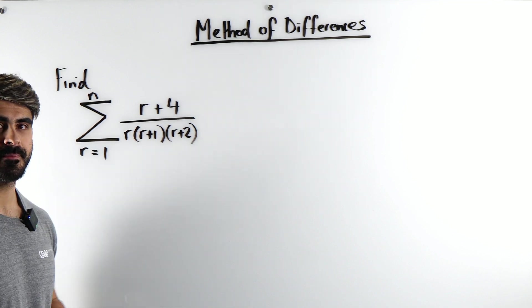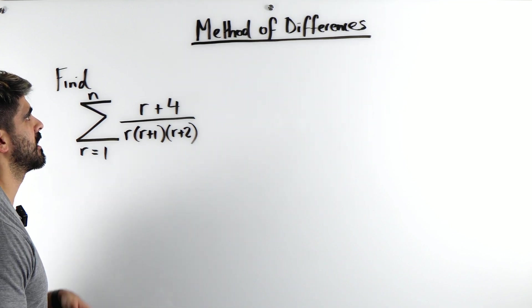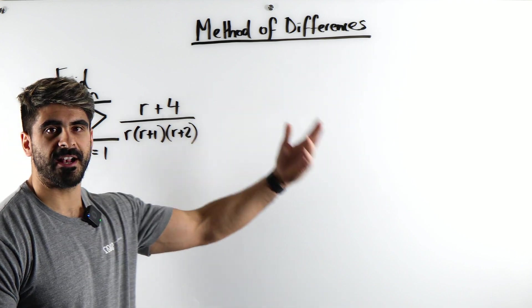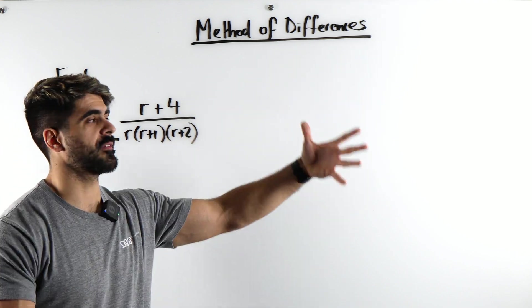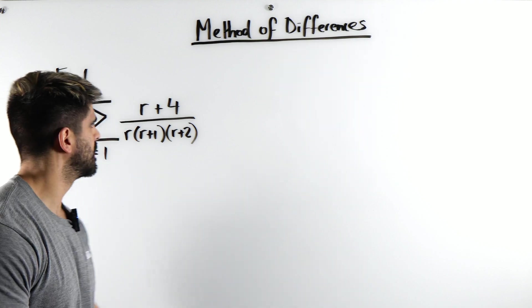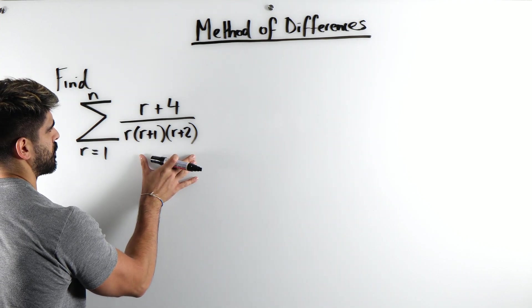So find this sum obviously in terms of n. Now the method of differences is just subbing in values and showing that most of everything just cancels out. But to do that we're going to have to rewrite this problem.